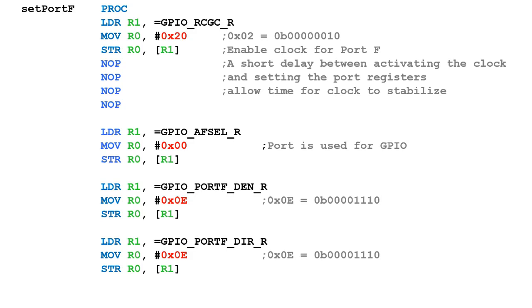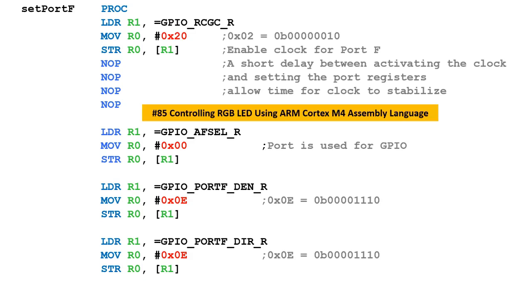The first subroutine is the initialization subroutine. If you are new to this channel, please check Video 85 — 'Controlling RGB LED using ARM Cortex-M4 Assembly Language' — where details of these subroutines are explained. The link is in the description, but here I'll briefly go through the subroutine.